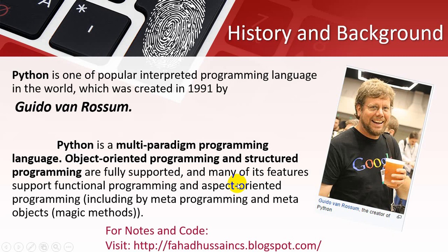Python is one of the most popular interpreted programming languages in the world, which was created in 1991 by Guido van Rossum. Python being an interpreted programming language means that there is no compiler — an interpreter is used instead.